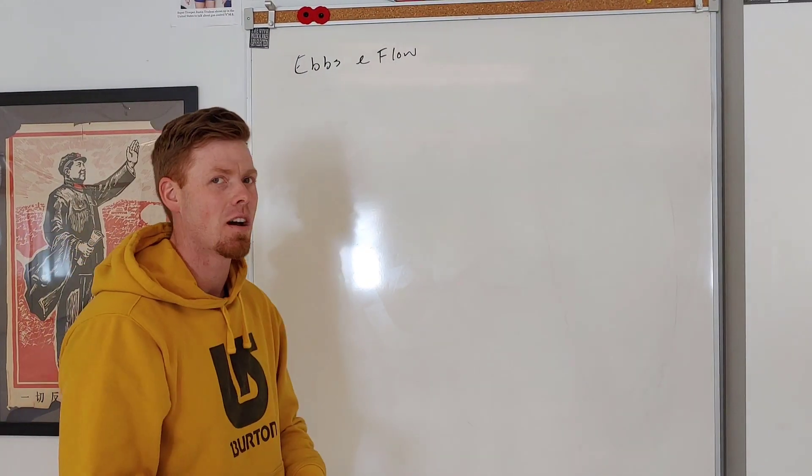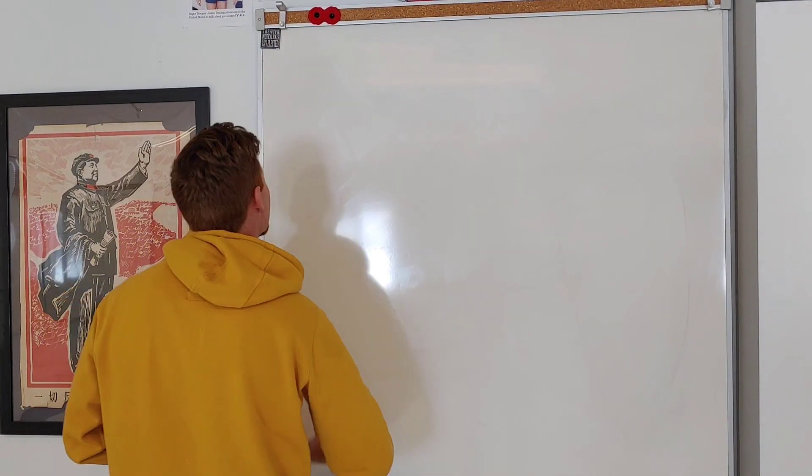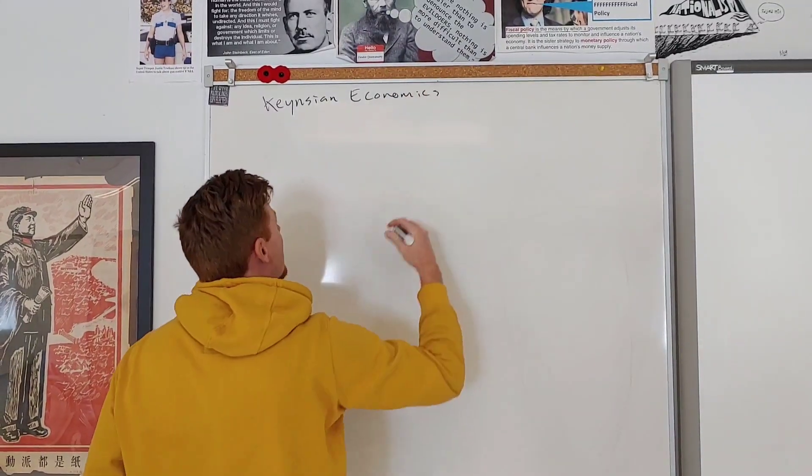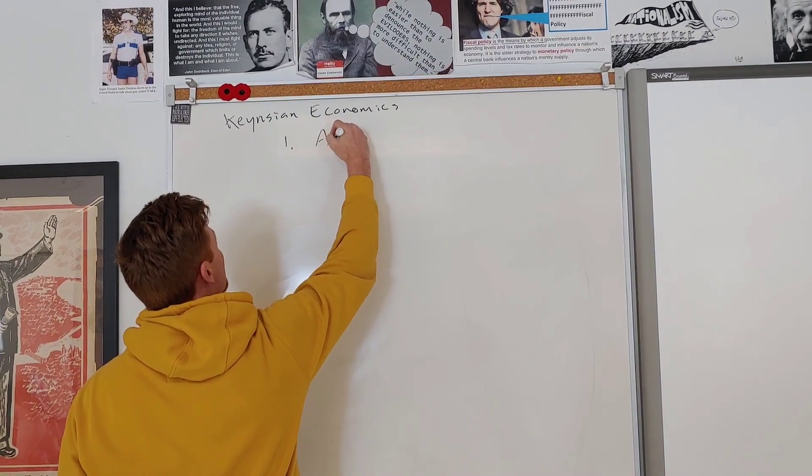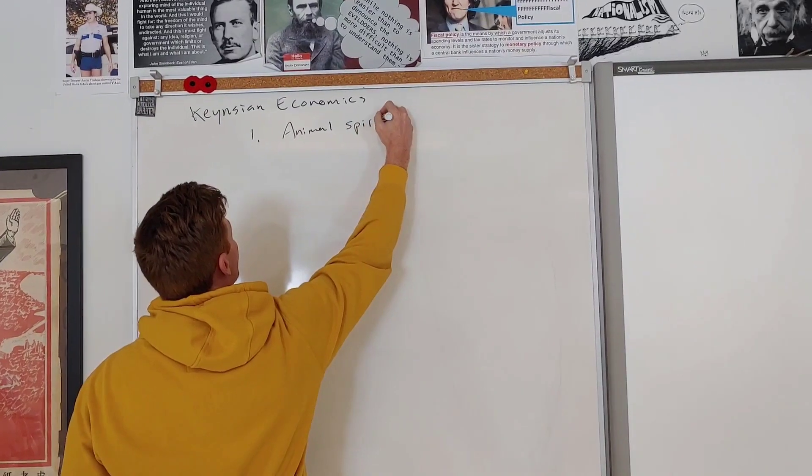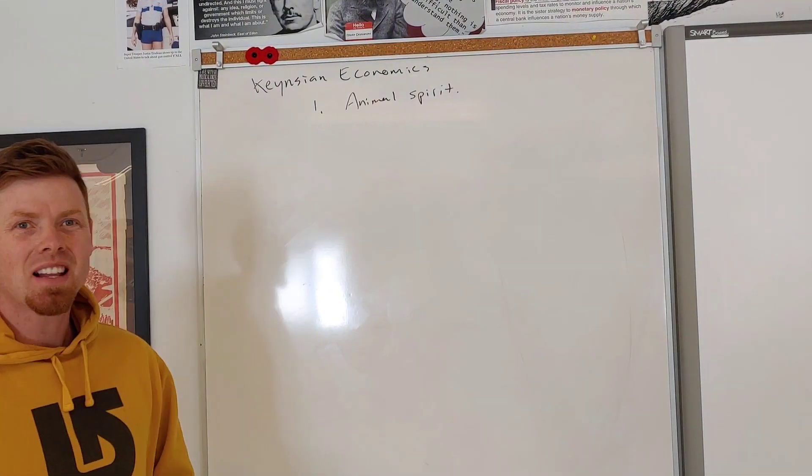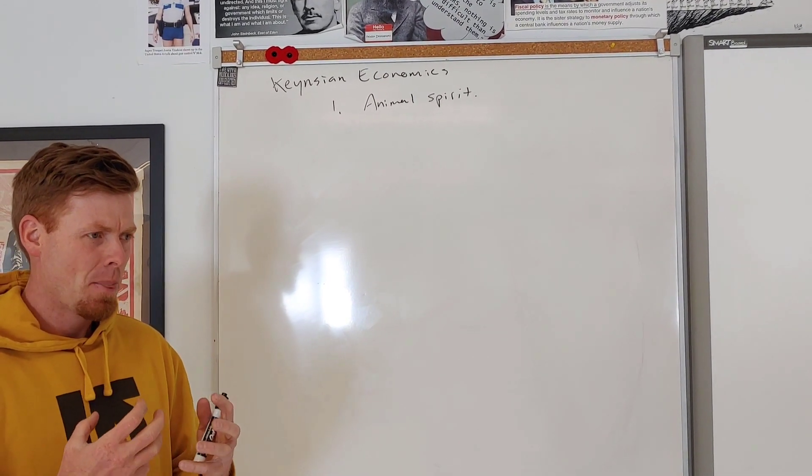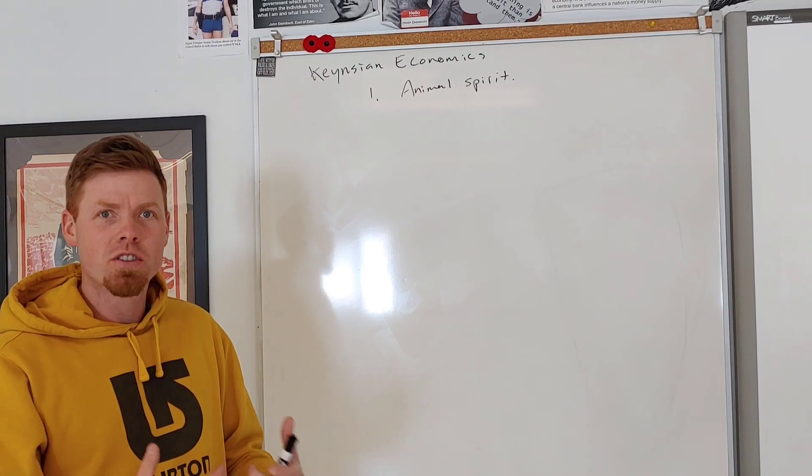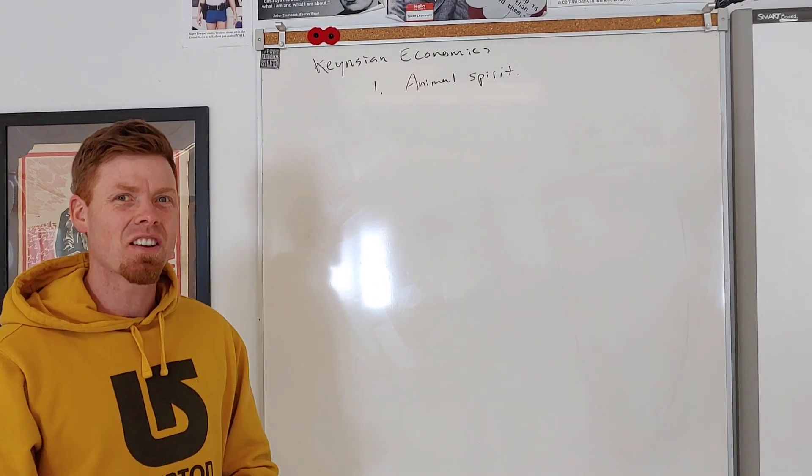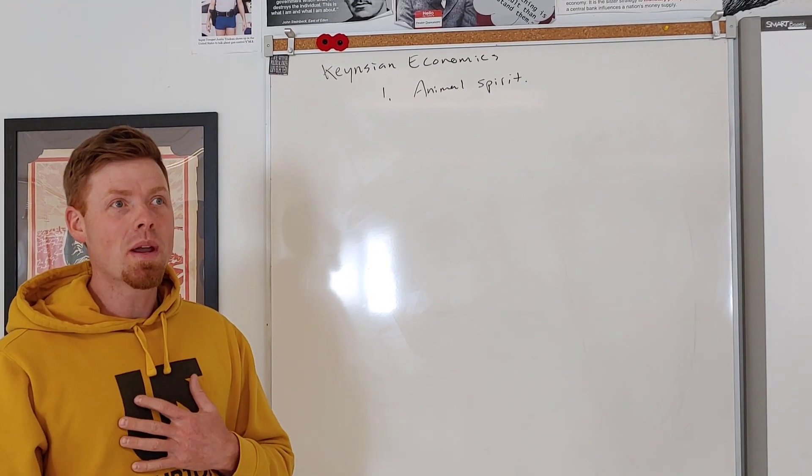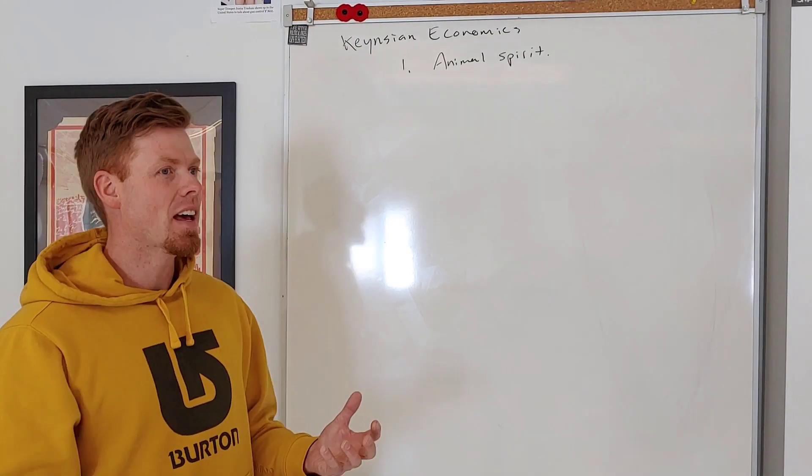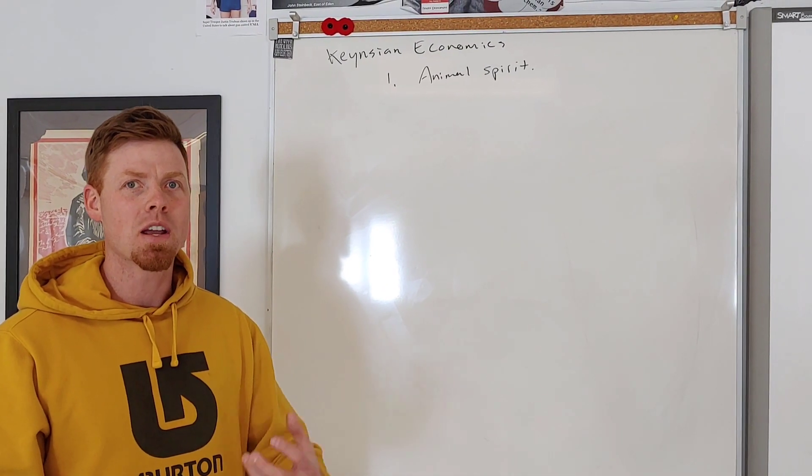The first thing you need to understand about Keynesian economics is he believed in two things. Number one, he believed in what was called the animal spirit. He thought that people, we're kind of like animals. We aren't really smart enough. We get really connected to our money. Money's kind of our driving force and we get really worried about using our money ineffectively. So we act really irrationally.